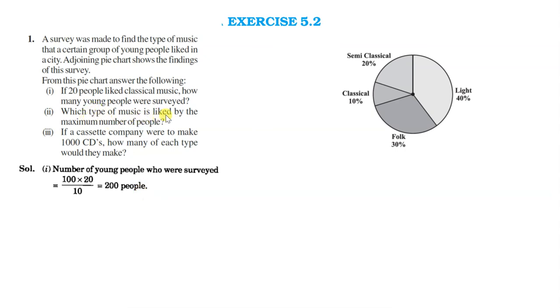In the second one, which type of music is liked by maximum number of people? Maximum percentage is of light music, that is 40 percent. It means the light music was liked by maximum number of people.